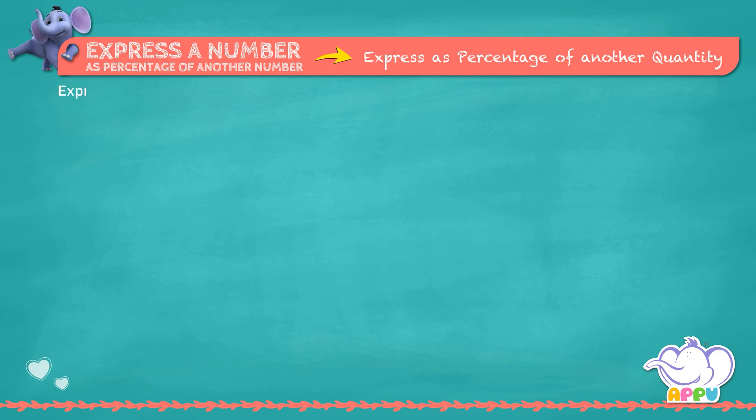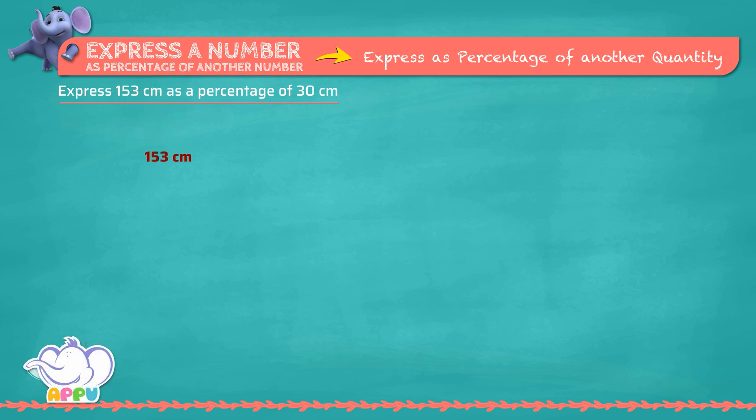Express 153 cm as a percentage of 30 cm. To express 153 cm as a percentage of 30 cm, we have to find 153 cm by 30 cm times 100.